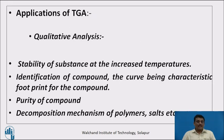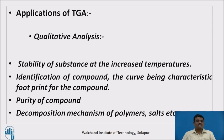Now we will learn the applications of TGA — qualitative analysis. The stability of a substance at increased temperatures can be determined. TGA also enables identification of a compound, as the curve serves as a characteristic fingerprint. Additionally, it can assess the purity of a compound and study the decomposition of polymers, salts, and similar materials.